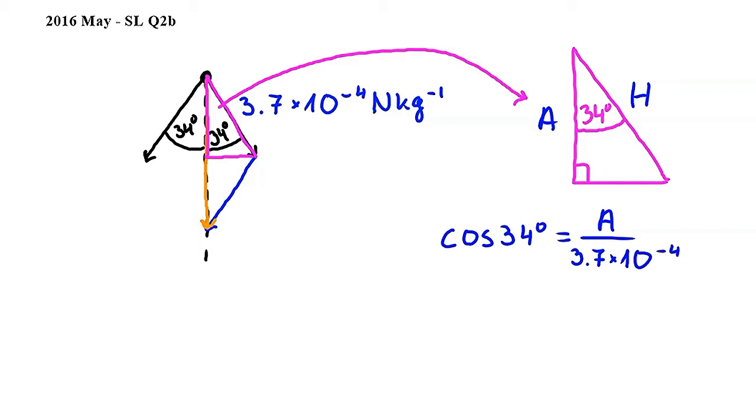Rearranging for A by multiplying 3.7 times 10 to the power of negative 4 on both sides, we get A equals approximately 3.07 times 10 to the power of negative 4 newtons per kilogram.